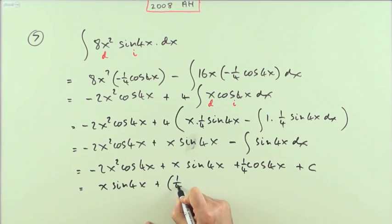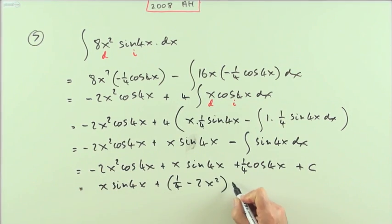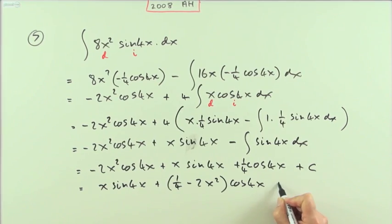I've got plus one quarter minus 2x squared lots of cos 4x plus C. But that last part's optional.